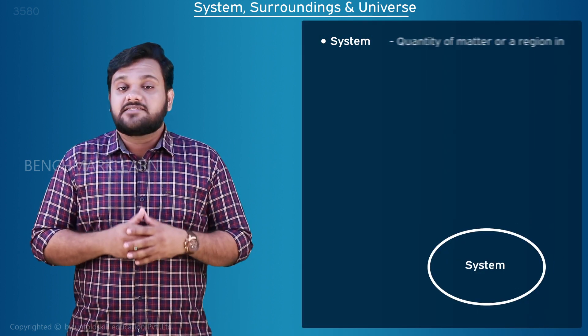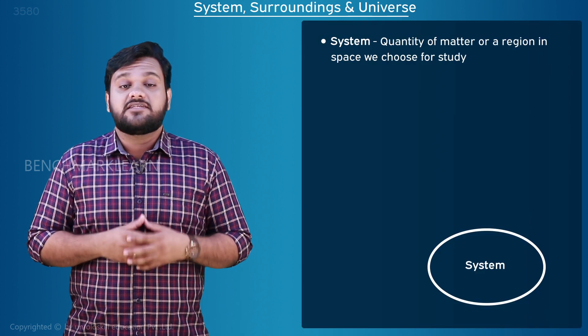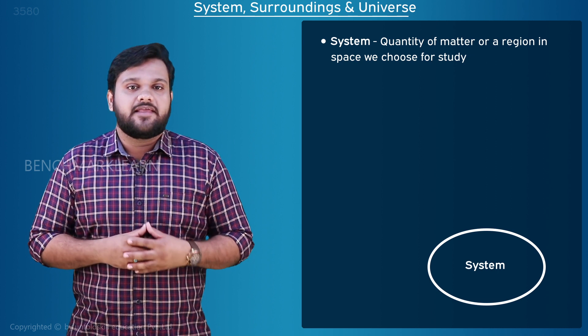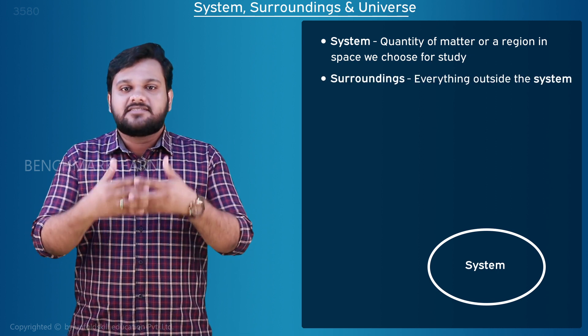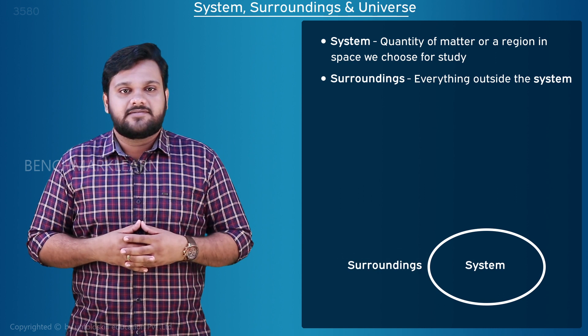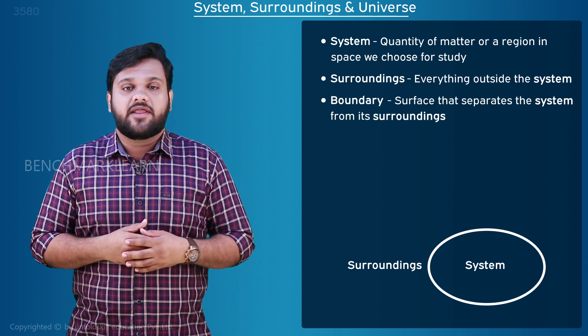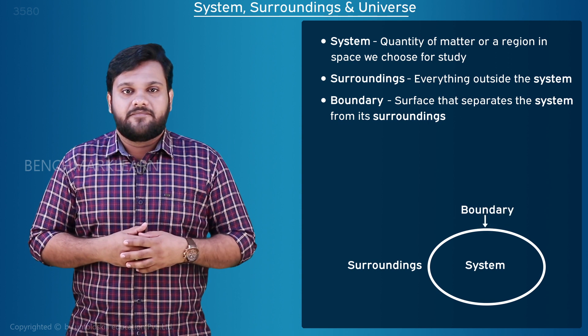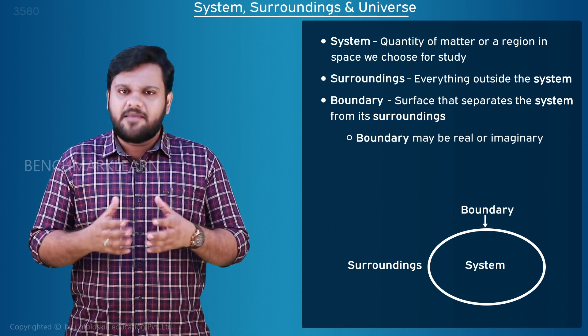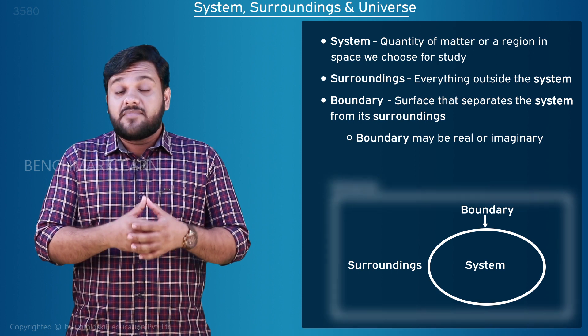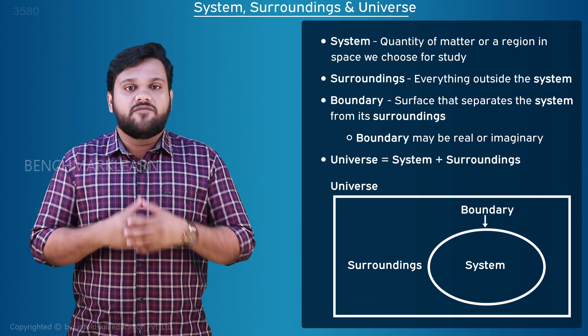A system is defined as the quantity of matter or a region in space we choose for study. Everything outside the system is called surroundings. The surface that separates the system from its surrounding is called the boundary. The boundary may be real or imaginary. The system and surroundings are collectively called the universe.